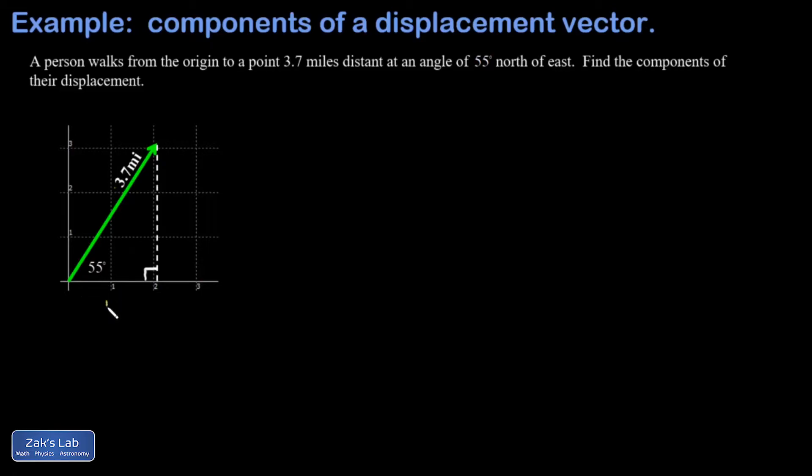I'll label these as rx and ry. R is the traditional symbol for displacement vectors, and the magnitude of the original vector I'll call r. Using right triangle trigonometry, sine equals opposite over hypotenuse, so sine 55° equals ry over 3.7, which means ry equals 3.7 times sine 55°.